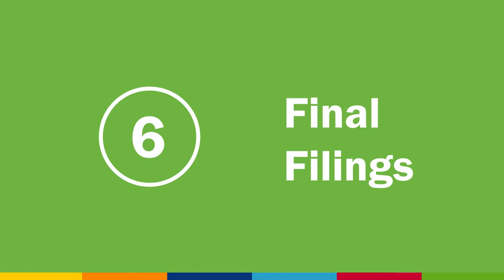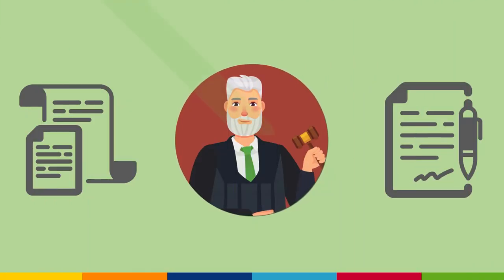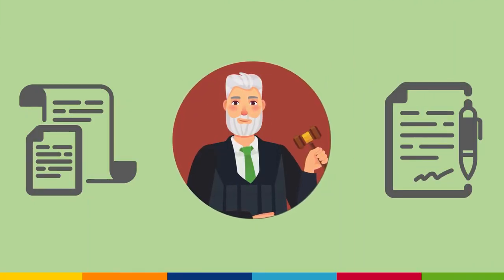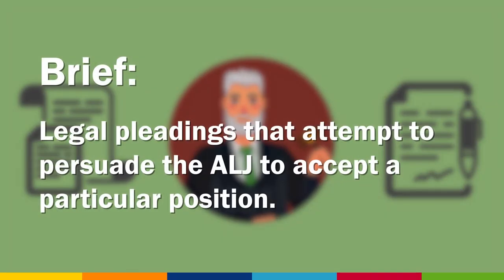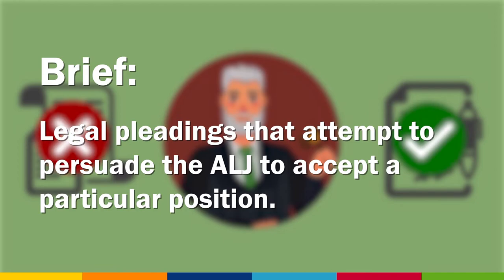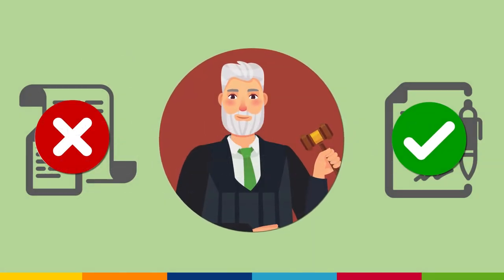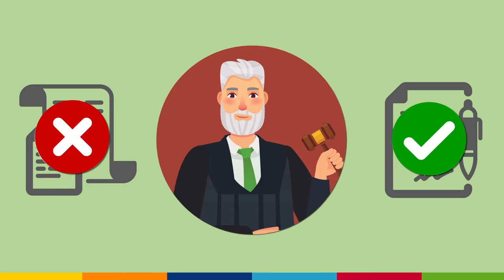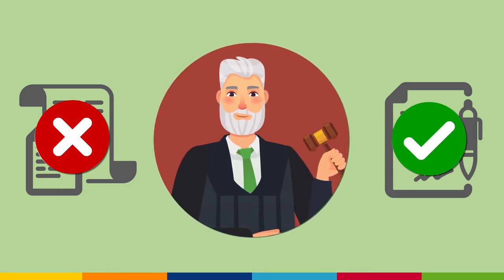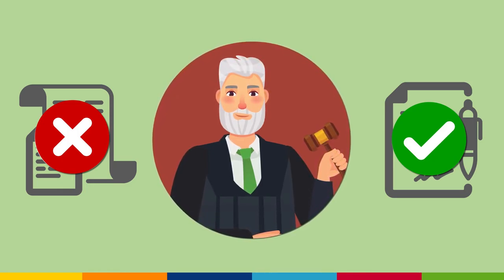Step 6 – Final Filings. Once all evidence is in the record, the ALJ sets a briefing schedule. Briefs are legal pleadings that attempt to persuade the ALJ to accept a particular position. The ALJ will close the record after the submission of briefs and issue an initial decision. Parties may file exceptions to the initial decision.